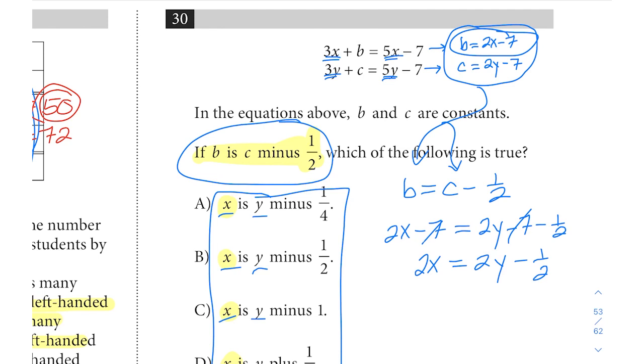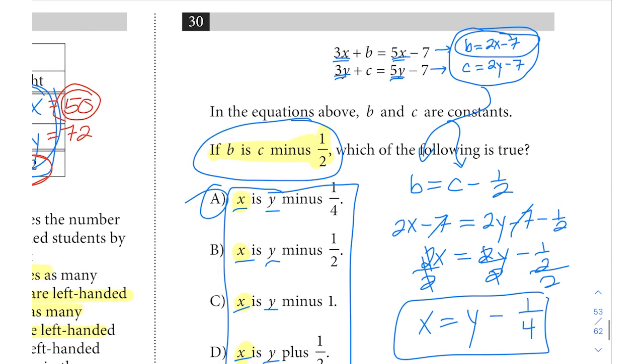Don't forget, use your answer choices to your advantage. Every single answer choice here is asking us to isolate x, so that's exactly what we want to do. If we divide everything by 2, we get x equals y minus one fourth, and that matches up with answer choice A.